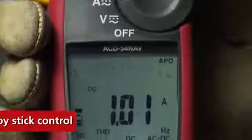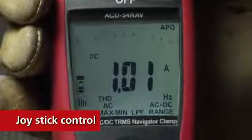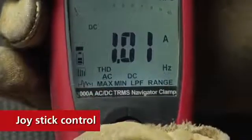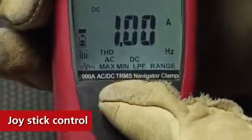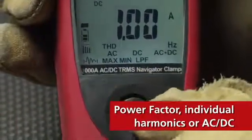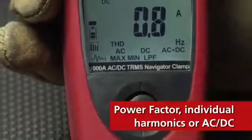Amprobe's Navigator Clamp Meters feature single-handed selection with a joystick control that makes it easy to choose between multiple measurements like Power Factor, Individual Harmonics, or AC-DC.